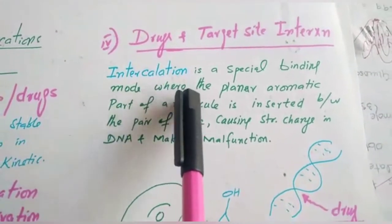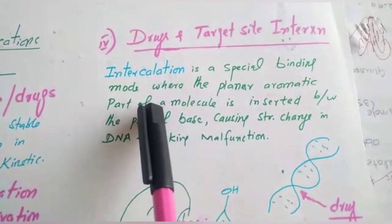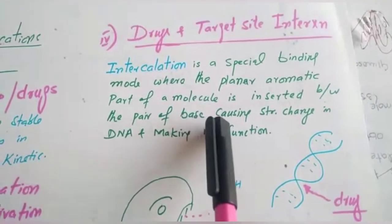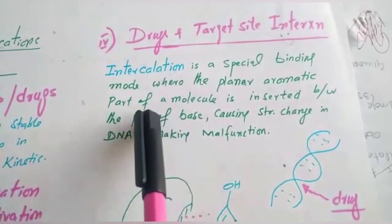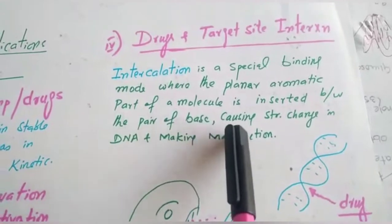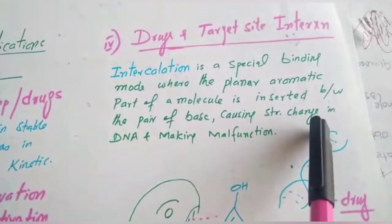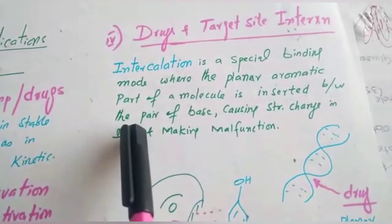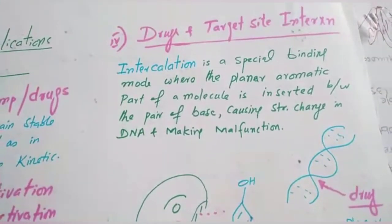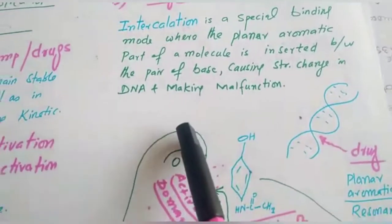This intercalation is a special binding mode, where the planar aromatic part of the molecule, your planar aromatic molecule, is inserted between the pair of bases, causing structural changes in DNA and making malfunction.